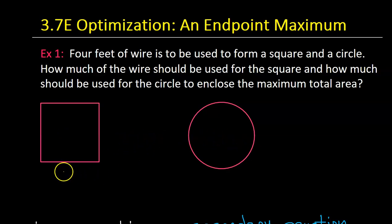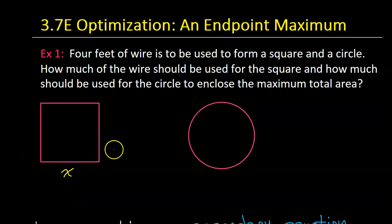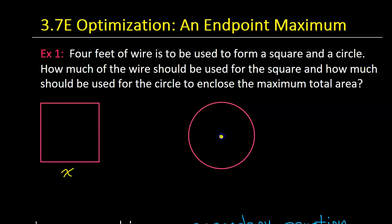We're going to need some variables. We can get away with a single variable x for the square, since automatically all four sides will be length x. For a circle, the defining characteristic is going to be the radius, so we'll definitely need r.